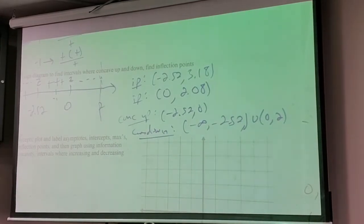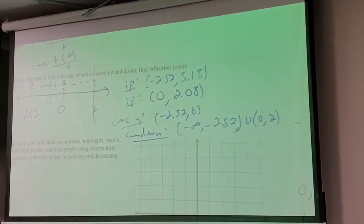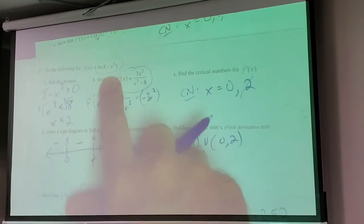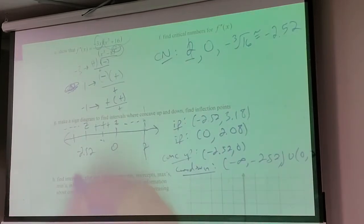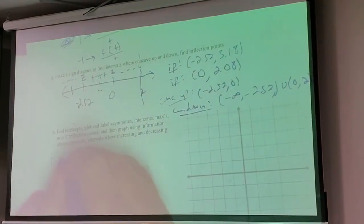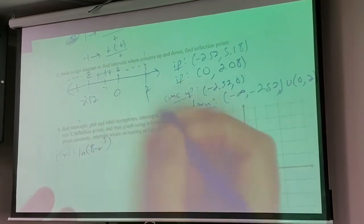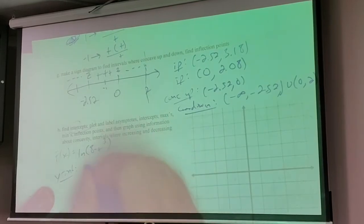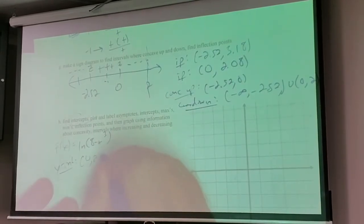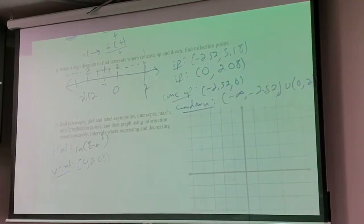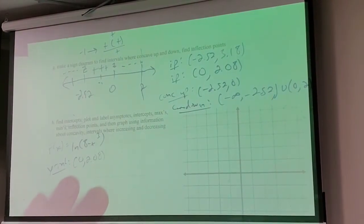Now the last thing - can we find intercepts? The y-intercept: plug in x = 0, you get natural log of 8 which is 2.08 - we already knew that. So my y-intercept happens to be one of my inflection points. For the x-intercept, set the function equal to zero. How do you do that? Can the natural log equal zero?